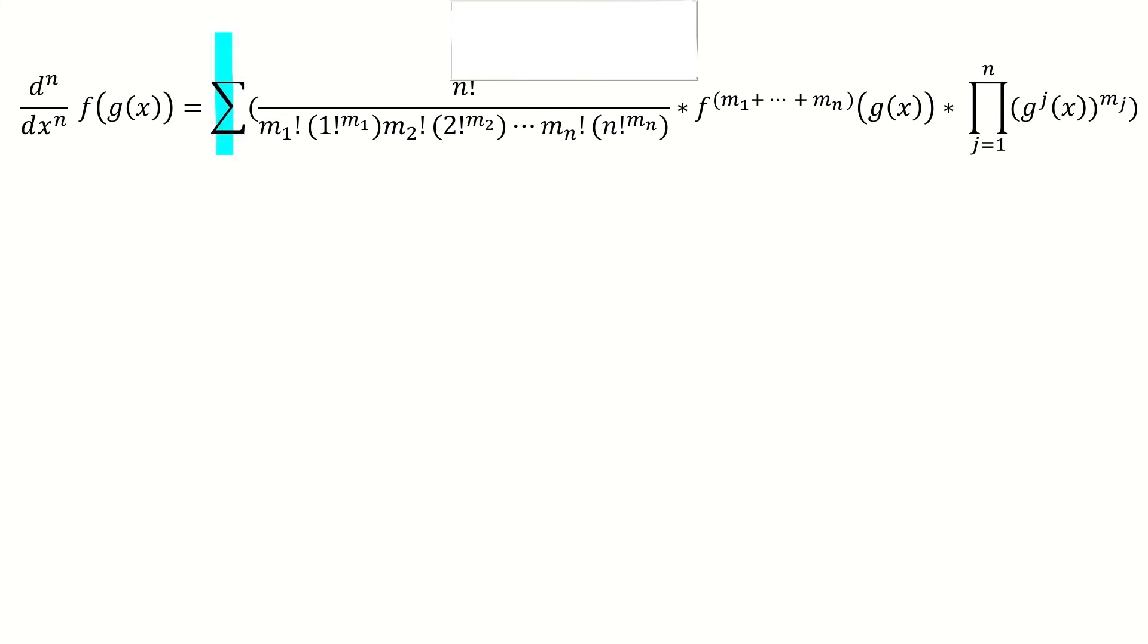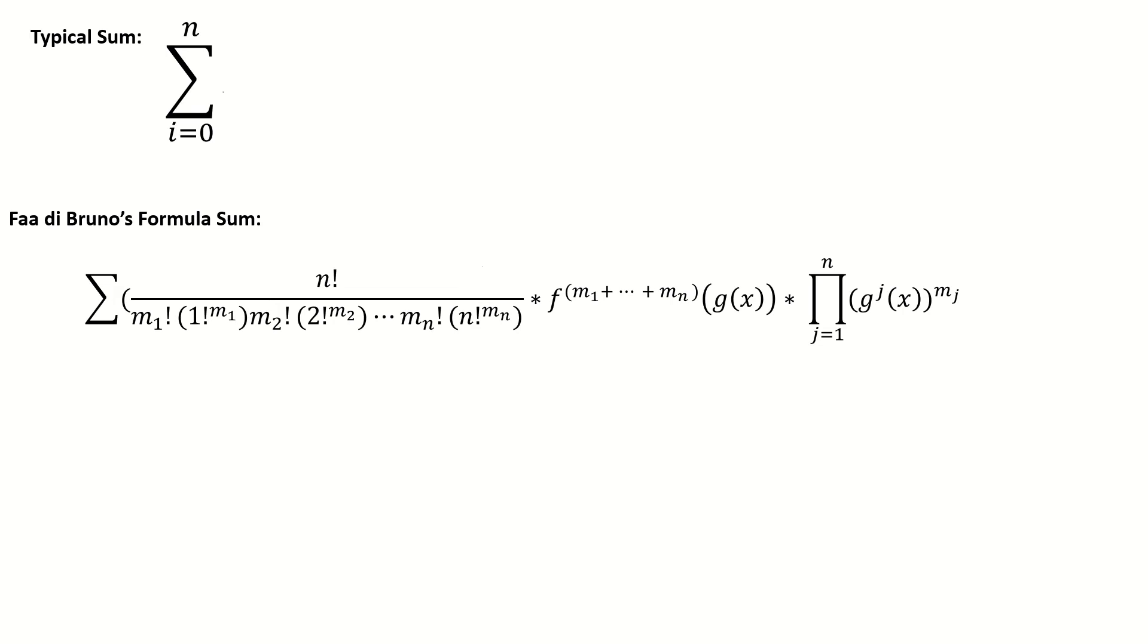Also, this sum is not like your typical sum that you see in calculus, where you have an index i that ranges between two integers. Instead, in Faa di Bruno's formula, we're summing over all sequences of numbers m1 through mn that meet a given condition.